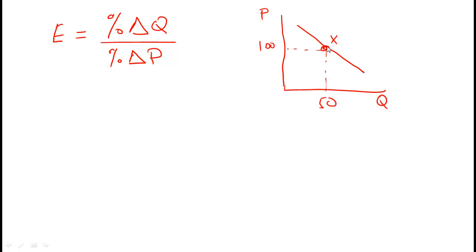We are finding the elasticity of demand for a given product at point X. The formula is percentage change in quantity over percentage change in price. You can model this by looking at a small segment of the line just above and below point X.